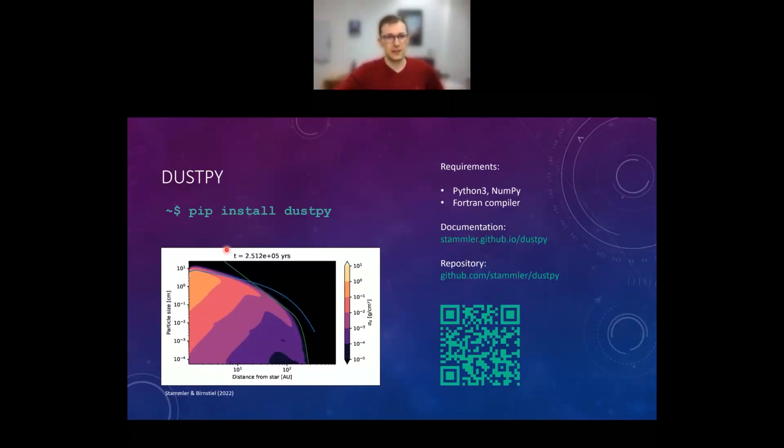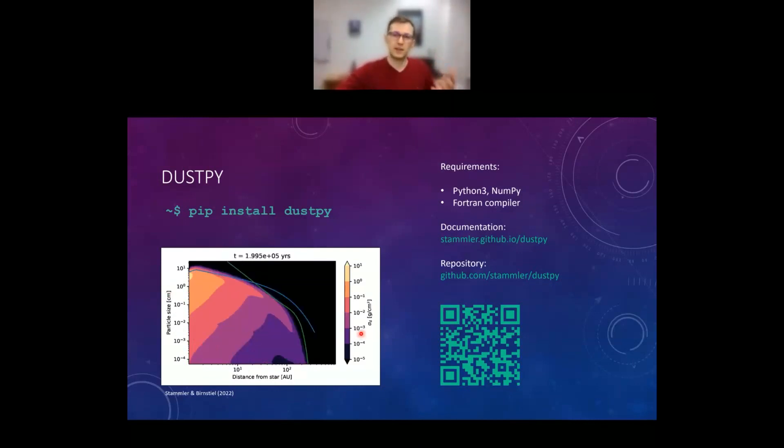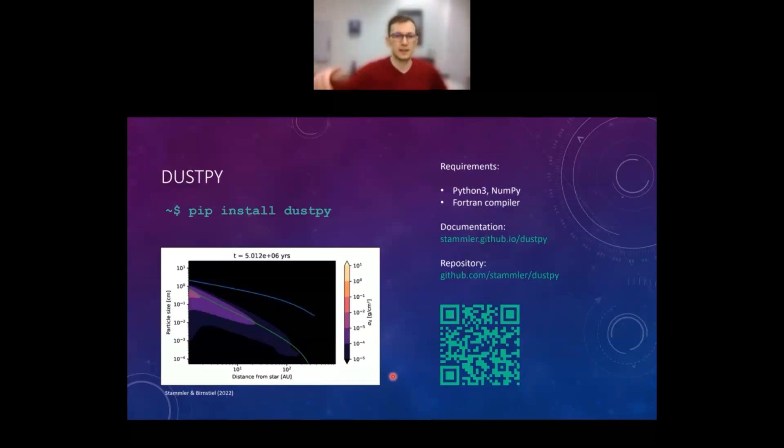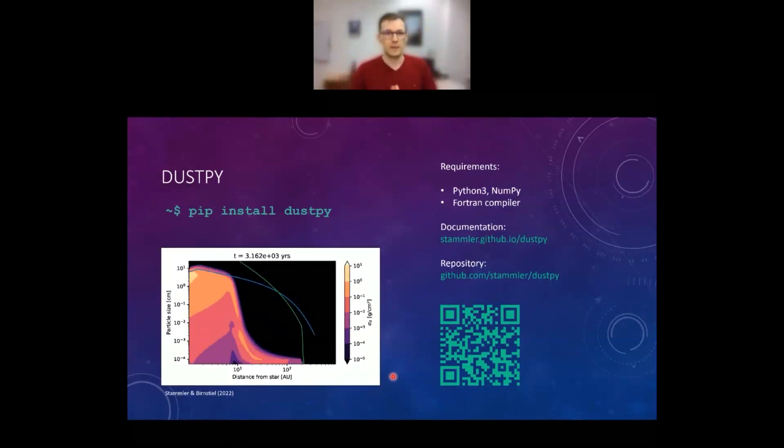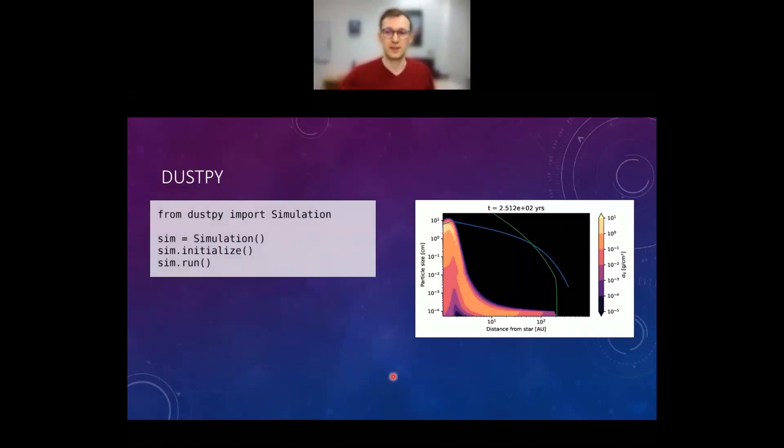Additionally, you see two lines here. One is the blue line, which is the so-called fragmentation barrier. So if the particles reach a certain size, their relative velocity gets large enough so they exceed their individual fragmentation velocity. And therefore, they fragment instead of grow further. This is the blue line. And the green line is the so-called drift limit, where particles just drift more rapidly towards the star than they can grow upwards. And just to show a quick demonstration how you would do this in DustPy, it's very simple.